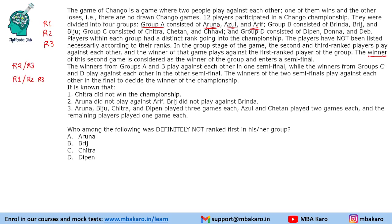The winner of match 2 enters a semi-final. Winners from groups A and B play against each other in one semi-final, while winners from groups C and D play in the other semi-final. The final is between one of A/B and one of C/D — so we cannot have both A and B, or both C and D, in the final.